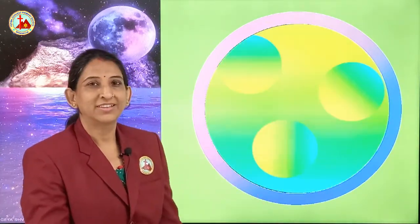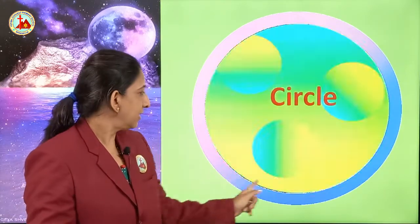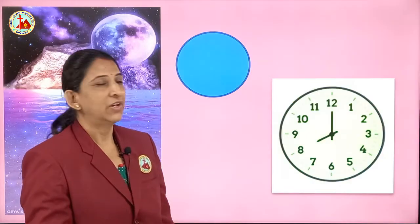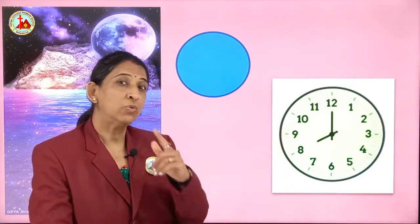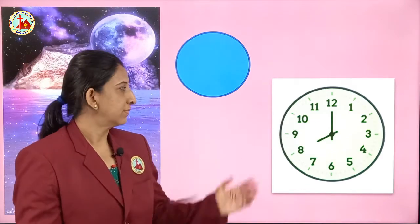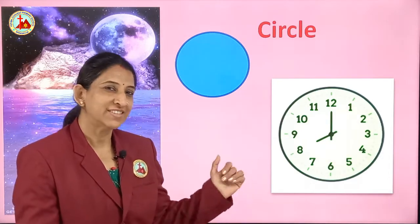Can you see around here? This shape is called circle. Have you seen around in your house? This is a clock. Which shape is this? Round — yes, circle. This is circle. Which shape is this? Circle.